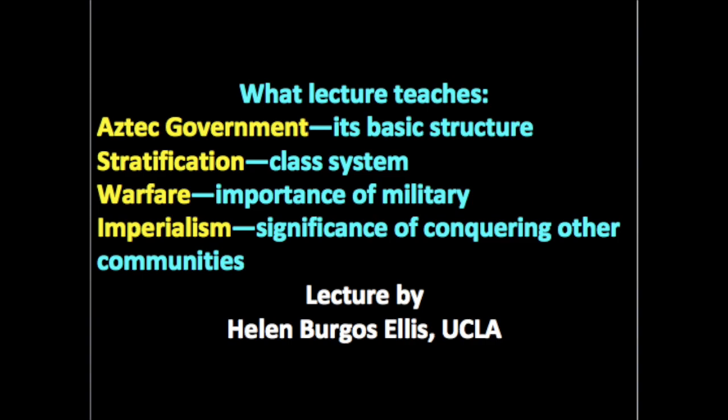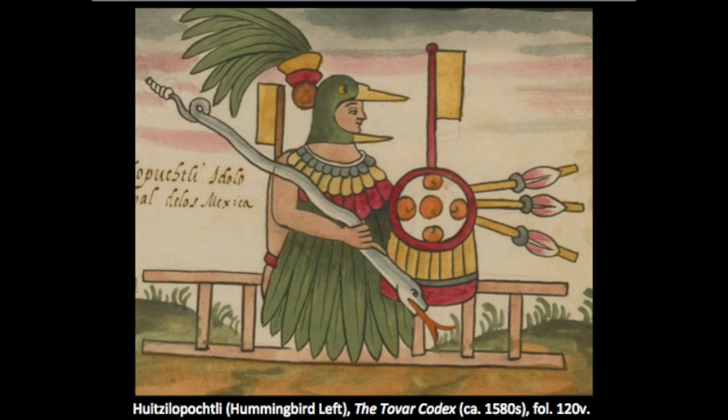Let's begin with this image of the tutelary god or tribal leader of the Aztecs. His name is Huitzilopochtli, which literally means 'hummingbird left.' Huitzilopochtli is a name in Nahuatl, the lingua franca of the Aztecs. This god told them during their migrations that they should continue wandering until they came upon a very specific vision, which would mark the place where they were to establish a nation.